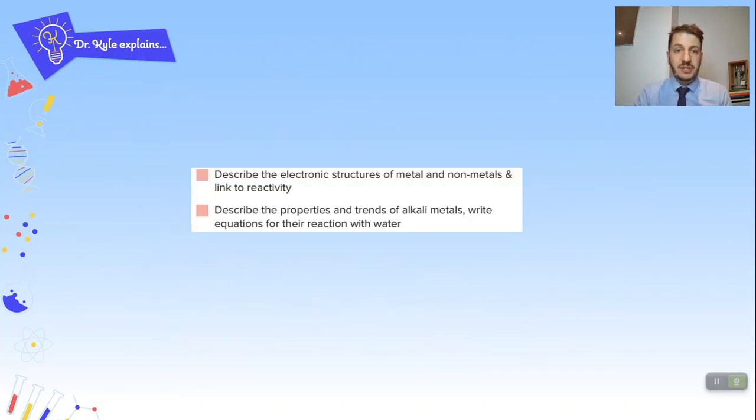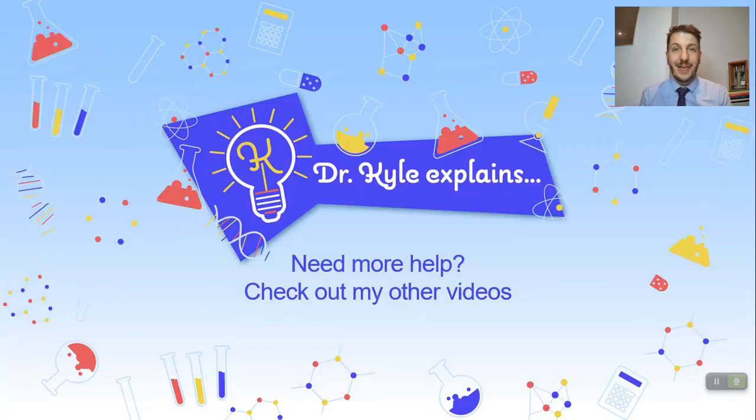Okay so what we've achieved today then is we've started to look and describe the electronic structures of the metals. Now we haven't done non-metals today but we have done for the metal and we've linked it for reactivity. We've also described the properties and the trends of the alkaline metals and written the equations for the reactions with water. Thank you very much for watching. Please do go through my other videos for more GCSE science content. And remember if you ever need any help with GCSE science, Dr Kyle explains. Thanks very much. Bye bye.